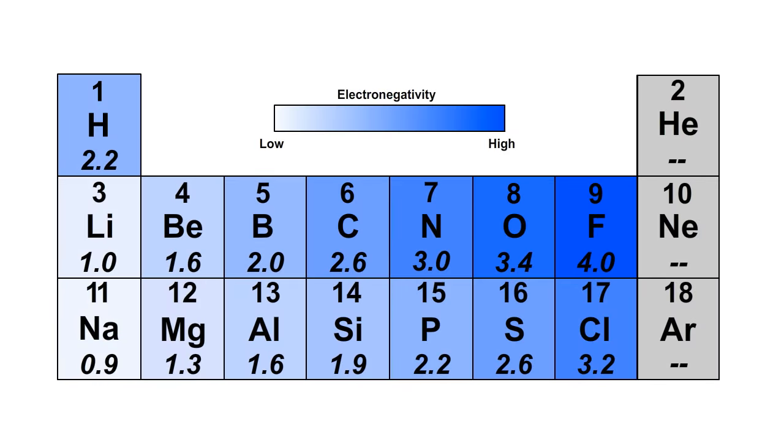We can look at this portion of the periodic table to help visualize the electronegativity of the first several elements. Notice the gradient of light blue to dark blue that indicates the increasing electronegativity of the elements.